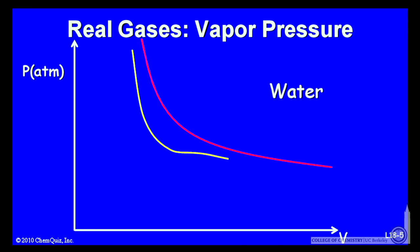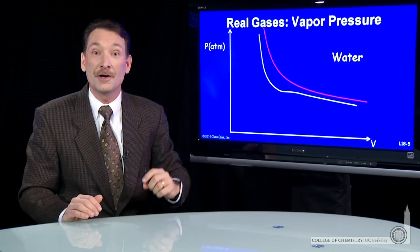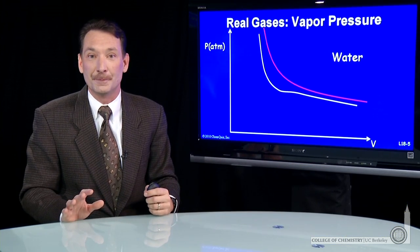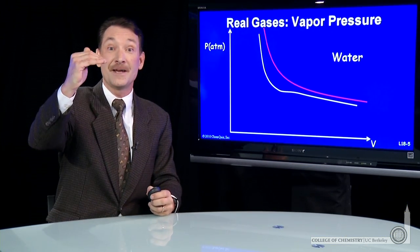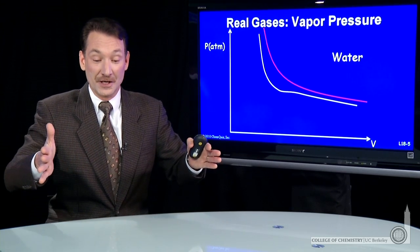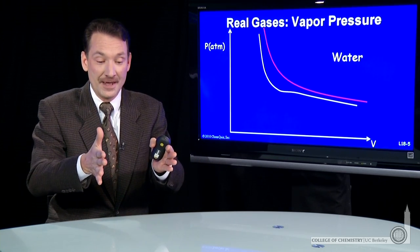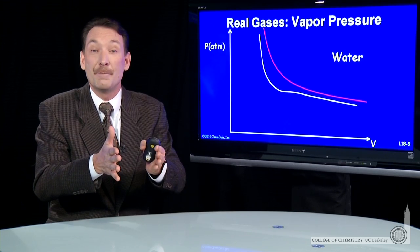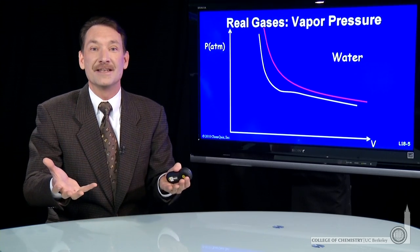As you lower the temperature, you'll get to a point where P times V is a constant no longer describes the pressure volume relationship. Above that temperature, you'll always have a single phase. That is, you can compress the gas down. That phase might get very dense, but I won't see distinct liquid and gas phase.